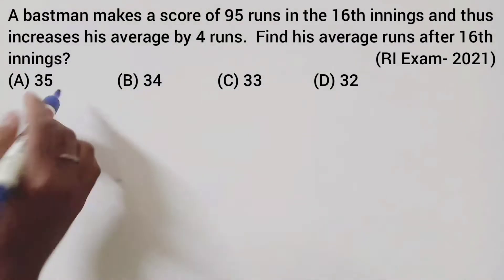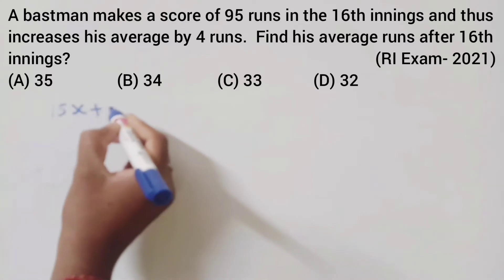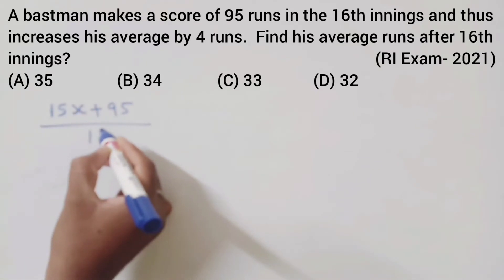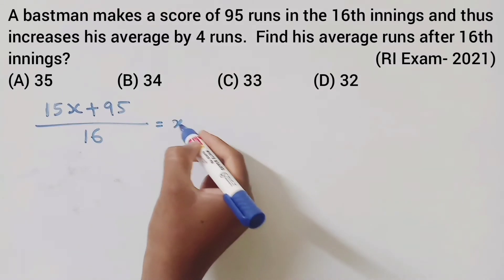Let average run equal x. For 15 innings, that's 15x. Plus the 16th innings, 95 runs. The total divided by 16 equals x plus 4.